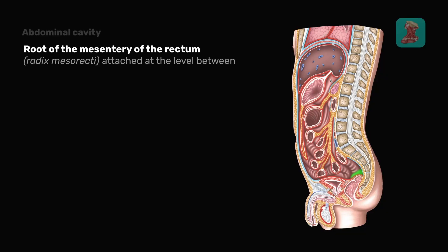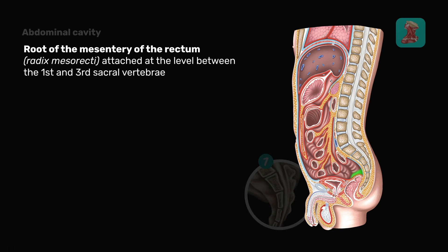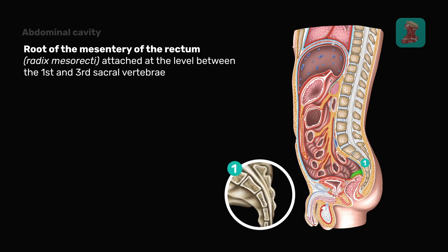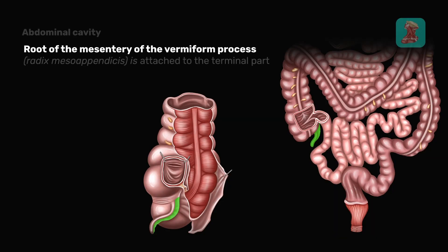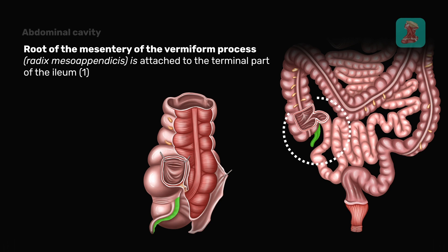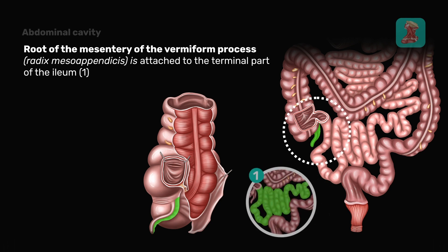The root of the mesentery of the rectum is attached at the level between the first and third sacral vertebrae. The root of the mesentery of the vermiform process is attached to the terminal part of the ileum.